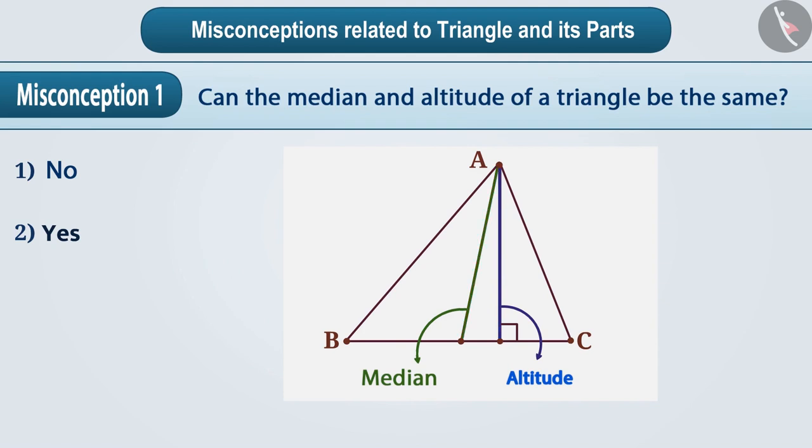Therefore, children begin to assume that median and altitude of a triangle can never be the same. With this understanding, they give the wrong answer and select option 1.